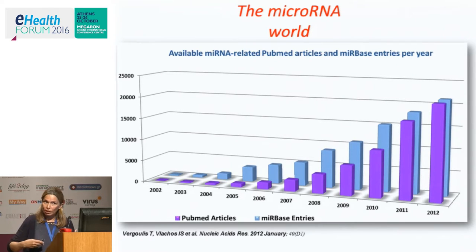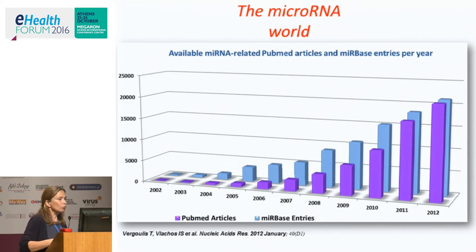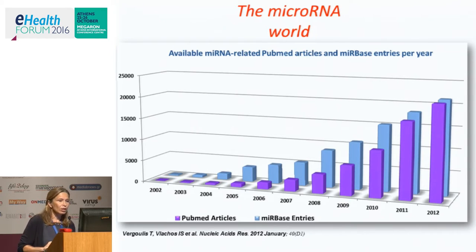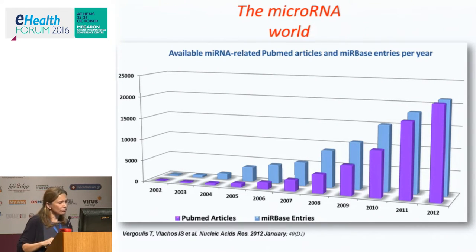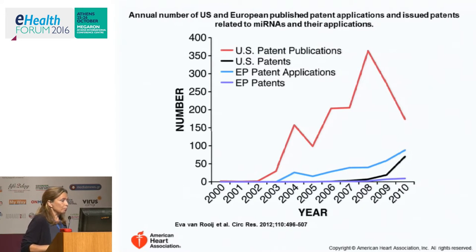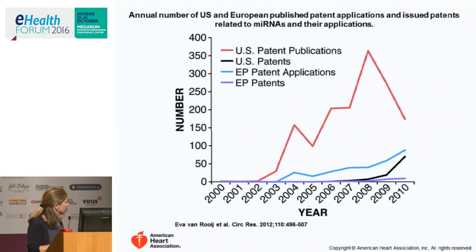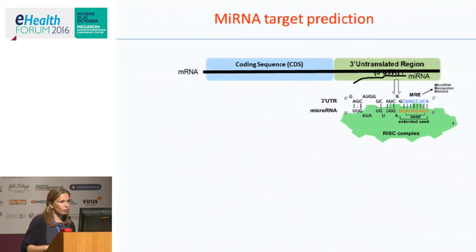This is all a field in flux. As we understand more about what is expressed in the genome, we learn more. From 2002 we found up to 20,000 microRNAs in different organisms. From 100 microRNAs in 2001, we now have 1,800 — and still we're not sure what is a microRNA and what is not. The annual number of U.S. and European published patent applications related to microRNAs shows a big explosion coming up, and we also have a patent in this area.